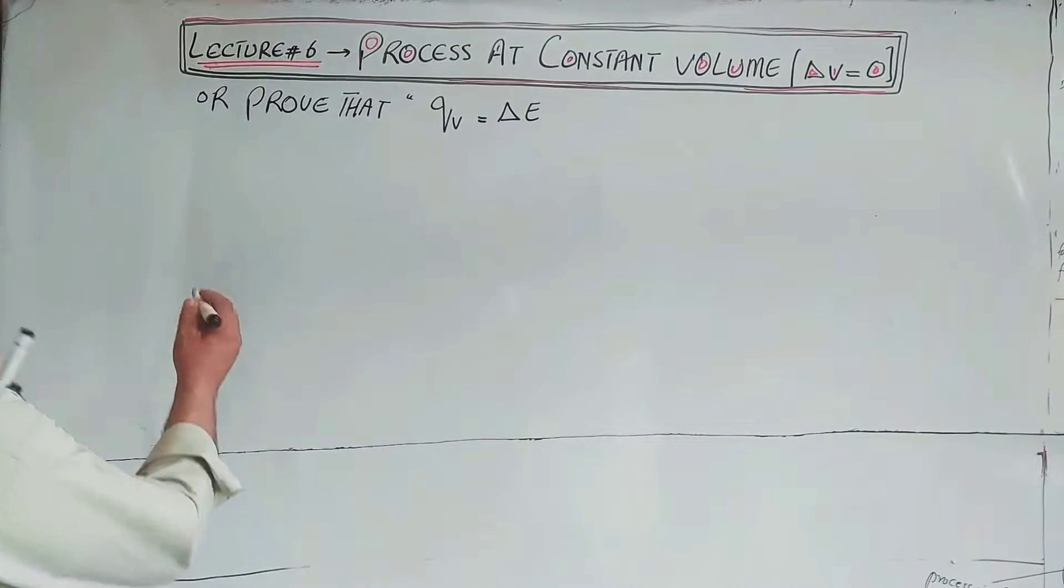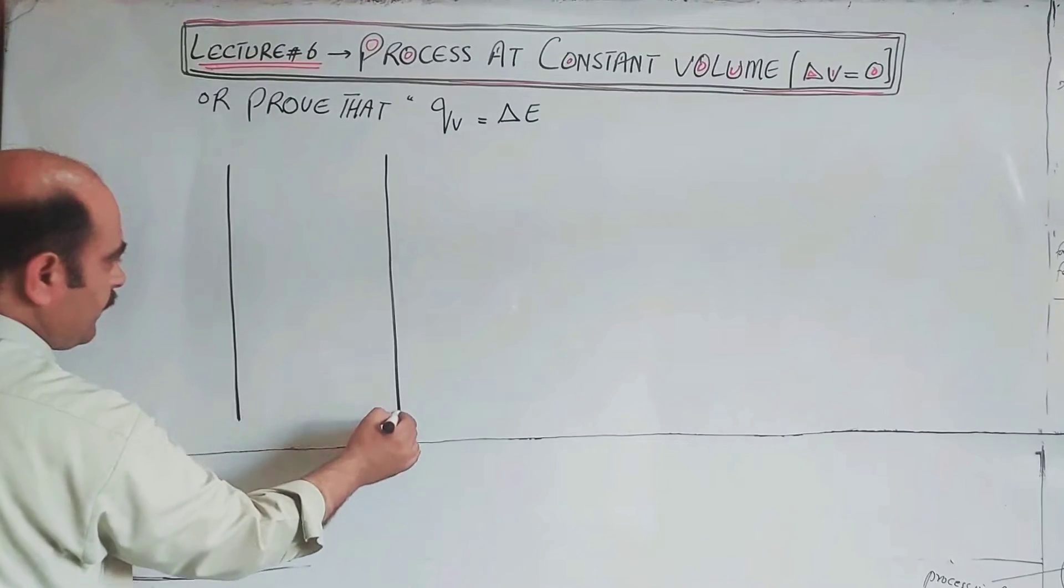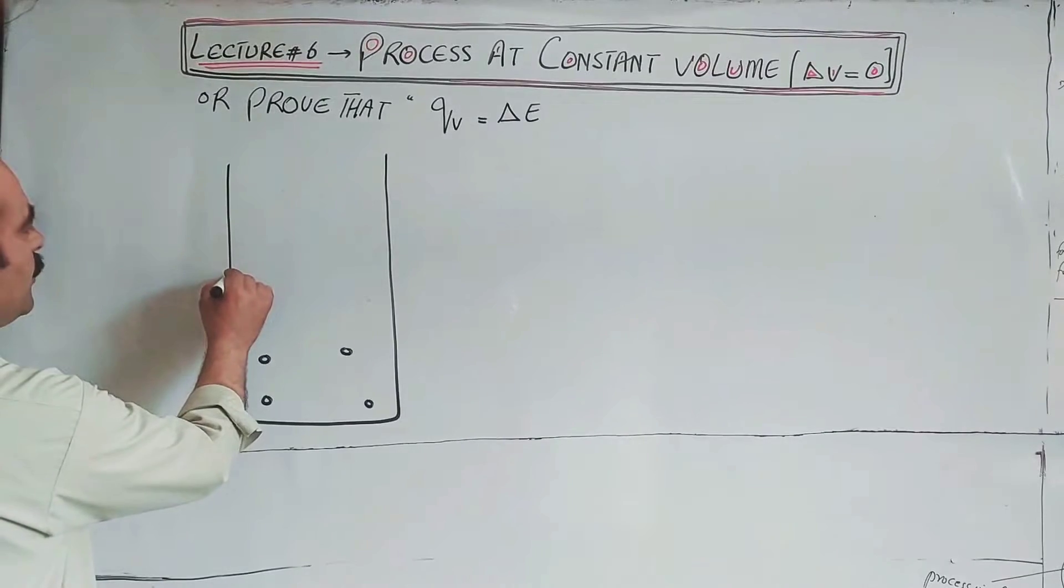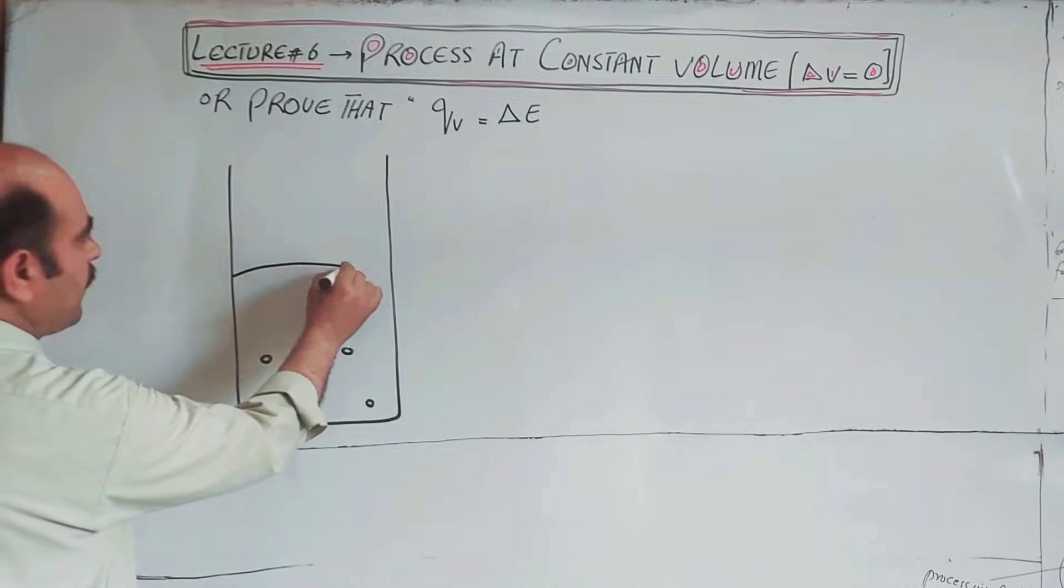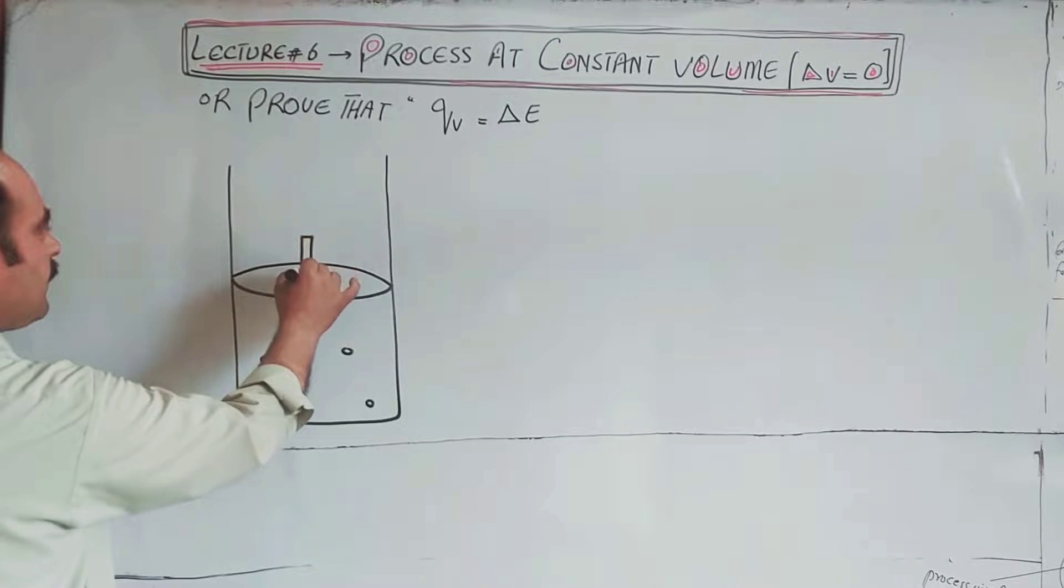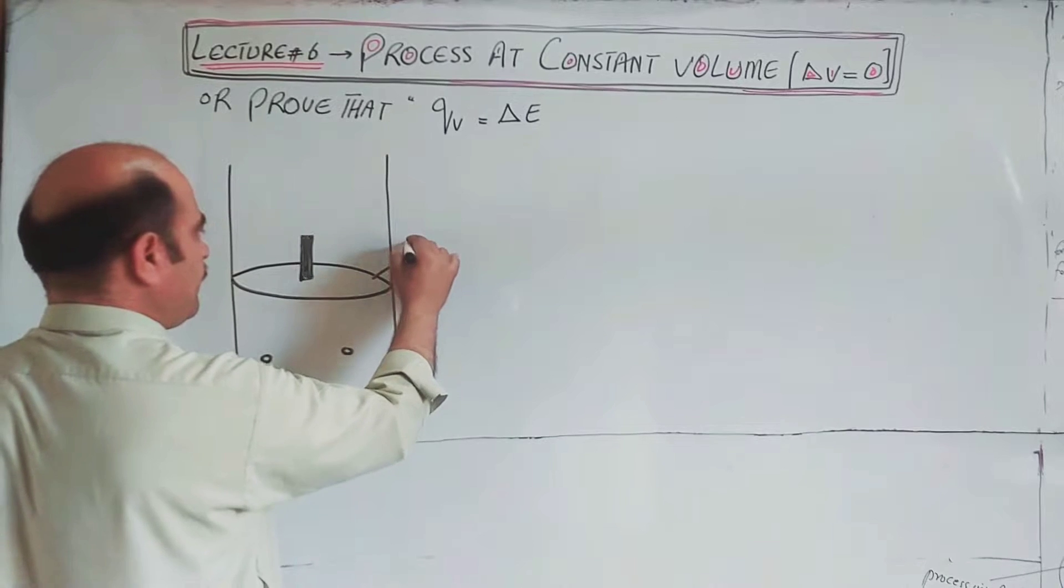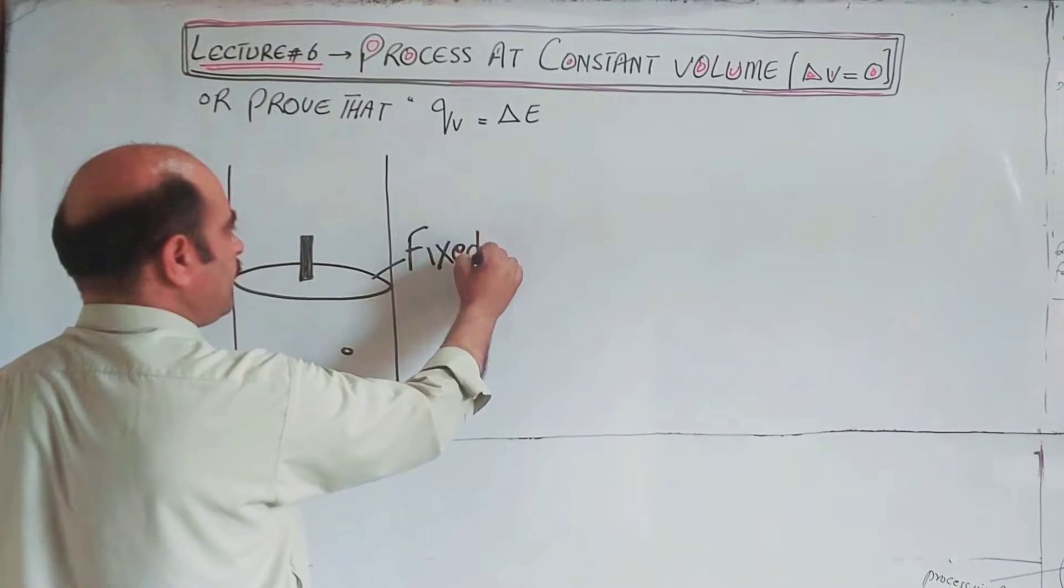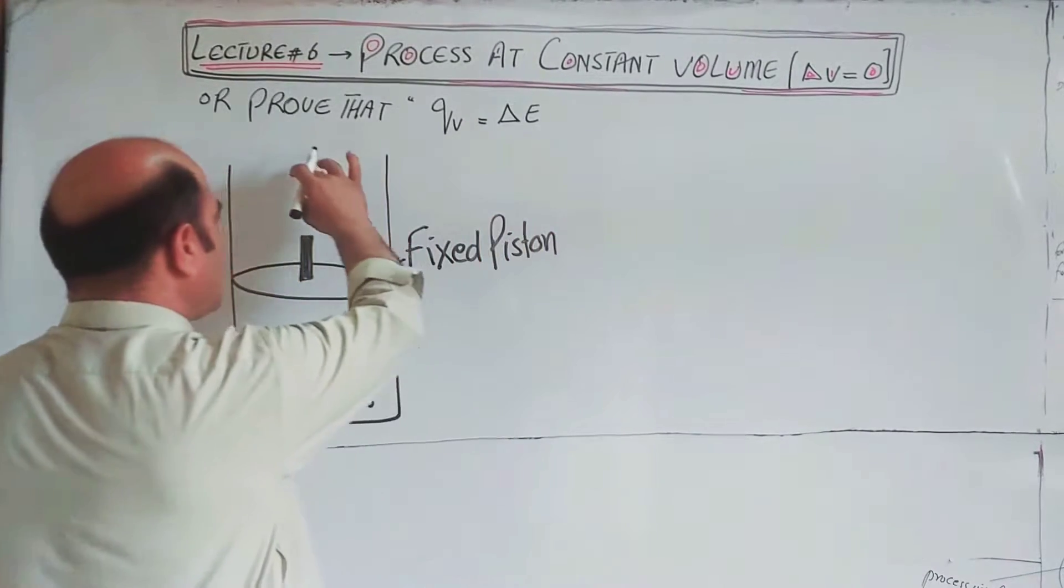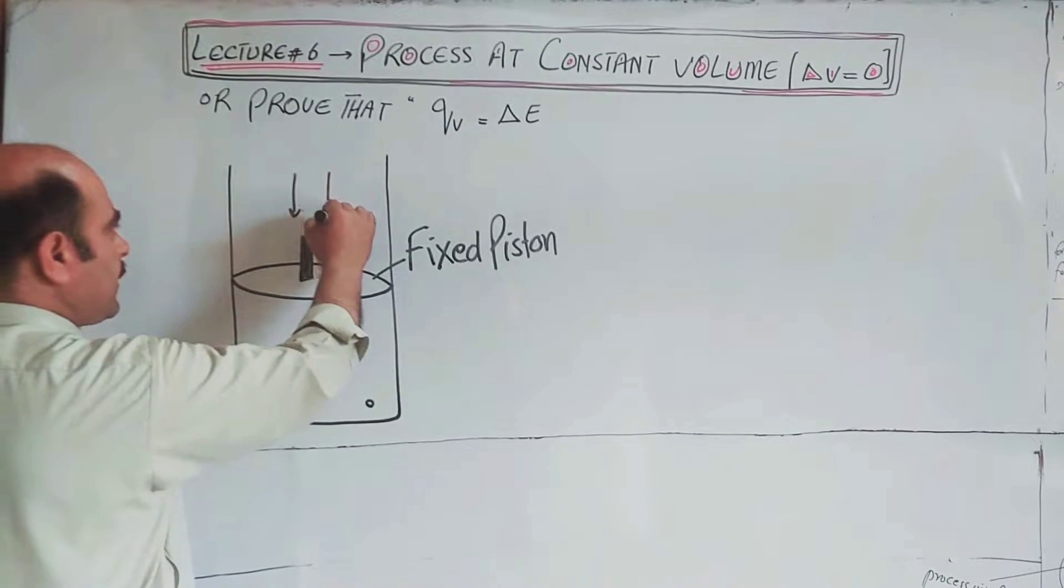Now for diagrammatic representation: we have a cylinder with a piston, and there is external pressure on the system.